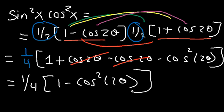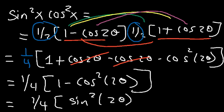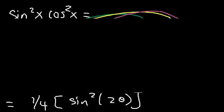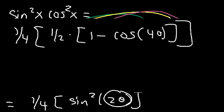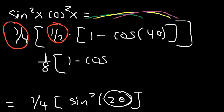Now, 1 minus cosine squared is a known identity: since sin²θ + cos²θ = 1, we have 1 minus cos²θ = sin²θ. So the expression becomes one-fourth times sine squared 2θ. Applying the power reducing formula once more, sine squared 2θ equals one-half times (1 minus cosine 4θ), since we double the angle. Multiplying one-fourth by one-half gives one-eighth, so the final answer is (1/8)(1 minus cosine 4θ).